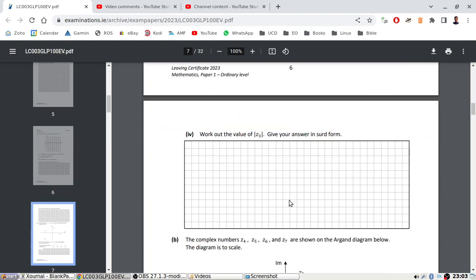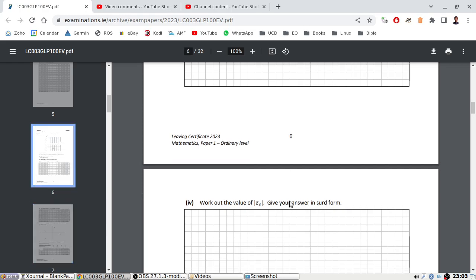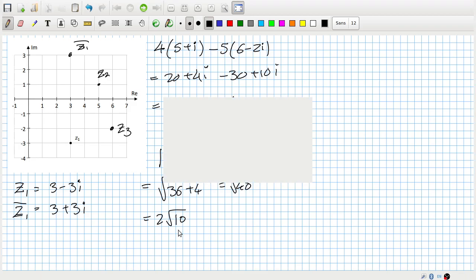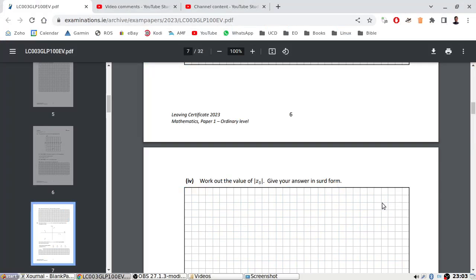And then work out the value of the absolute of Z3. The absolute of Z3 would be the absolute of 6 minus 2i, or the modulus I should say, which is root 6 squared plus 4 squared. So that's root 40, which is 2 root 10. Giving your answer in surd form.